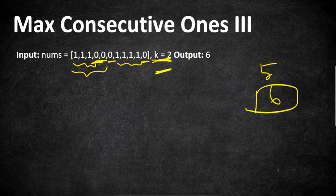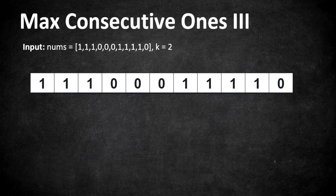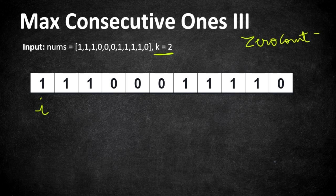Let's do a quick dry run before getting into the code. As usual, a sliding window has two pointers: pointer i points at the beginning of the subarray and pointer j scans and fixes the window size. We'll fix the window size based on the number of zeros we can flip. We maintain a variable zero_count that tracks the number of zeros in the current window. If zero_count exceeds k, we adjust the window. We also have a result variable that stores the longest subarray so far.